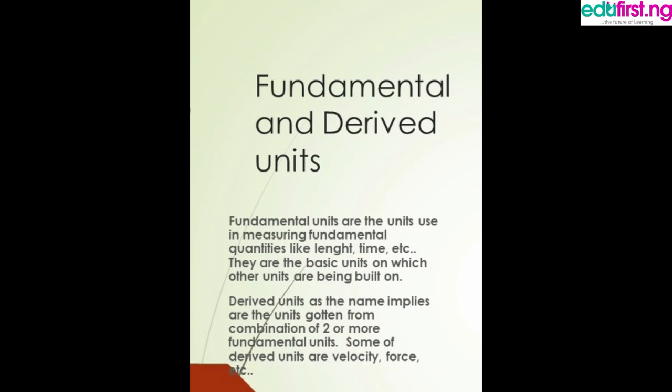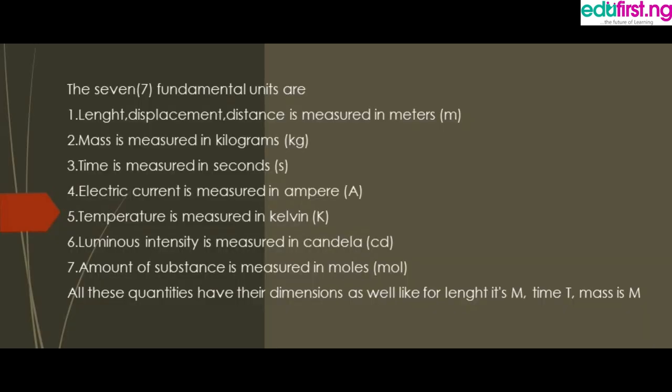We mention their quantity and their unit. The first one is length, or displacement, or distance. When we want to measure length, it can be measured vertically or horizontally. When it is horizontal, we are talking about length or distance. When it is vertical, we are talking about height. These are the quantities, but the unit used to measure them is meter.